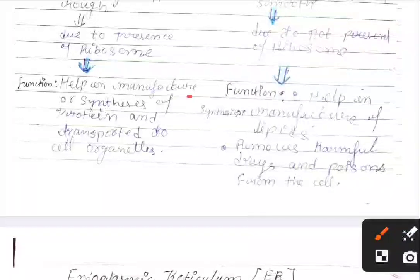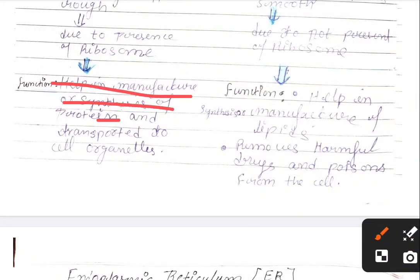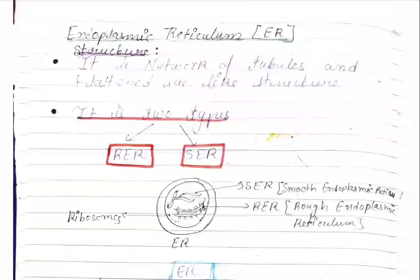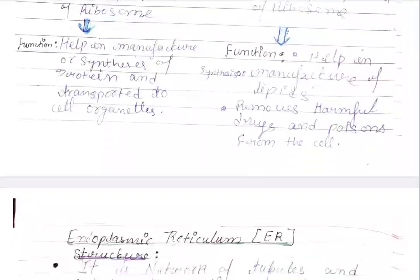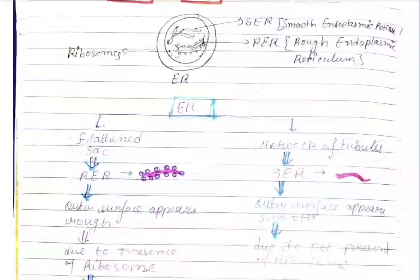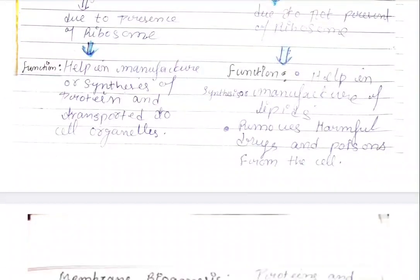RER mainly helps in the manufacture and synthesis of proteins. SER helps in the manufacture and synthesis of lipids and fats. SER also removes harmful drugs and poisons from the cell.